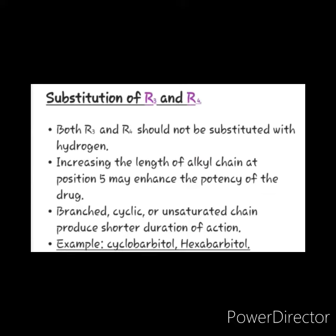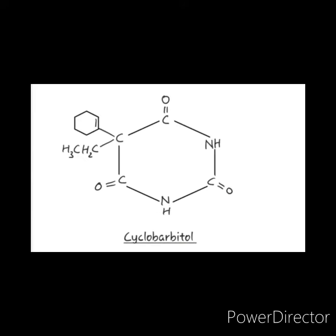Let us study about substitution at R3 and R4. Both R3 and R4 should not be substituted with hydrogen. Increasing the length of the alkyl chain at position 5 may enhance the potency of the drug. Branched, cyclic, or unsaturated chains produce a shorter duration of action. Examples are cyclobarbital and hexabarbital. This is the structure of cyclobarbital, which does not contain hydrogen at the 5th position but instead contains an alkyl chain and a cyclic compound.